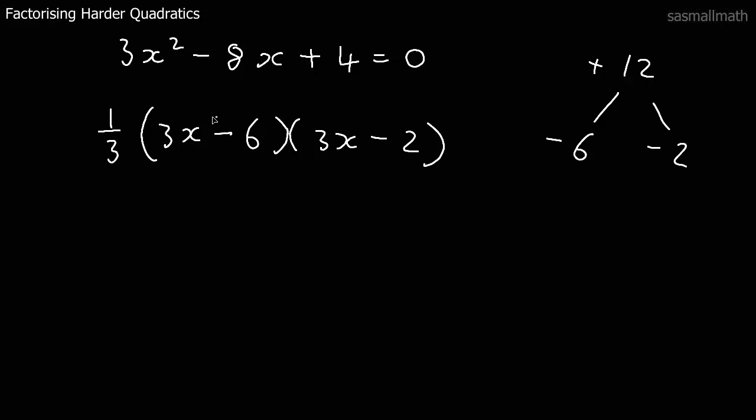Common factor is this one. Take a three out. A quick check. We'll look at this. Minus two times minus two is plus four. We've got the three x squared there. We've got a minus two times three makes minus six. And an x times a minus two makes minus two x. So that gives us our minus eight x. So it works.